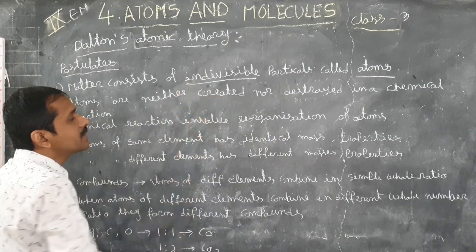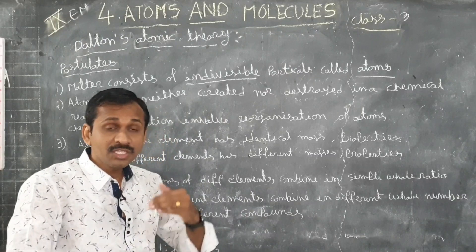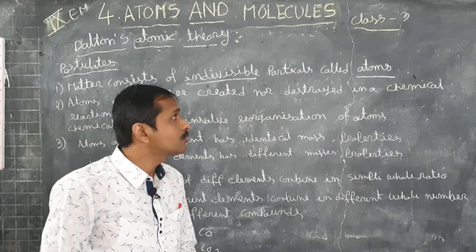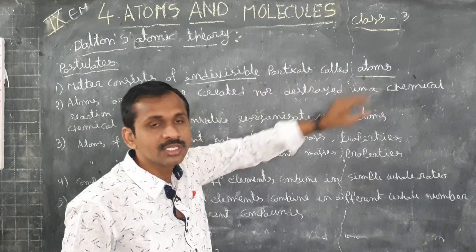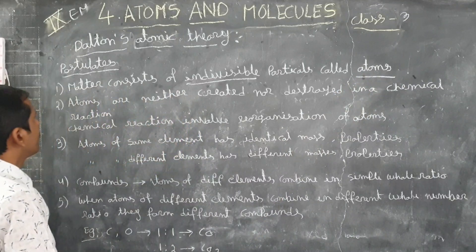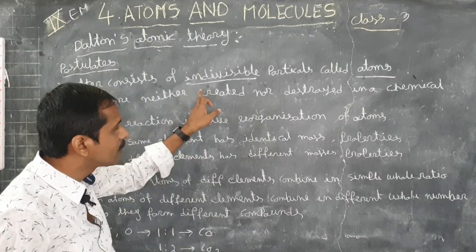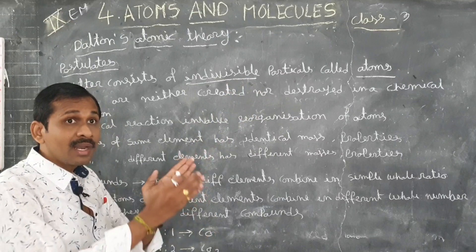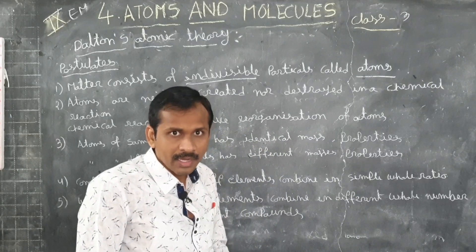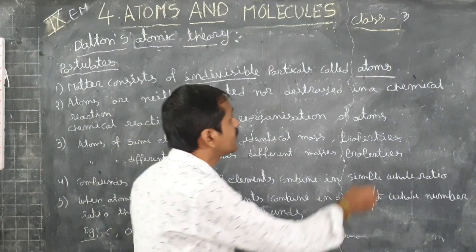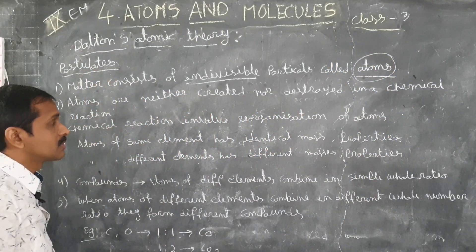What does that mean? Every matter around us — every matter — is made up of indivisible particles. Those are called atoms. This is Dalton's first point of Dalton's Atomic Theory.